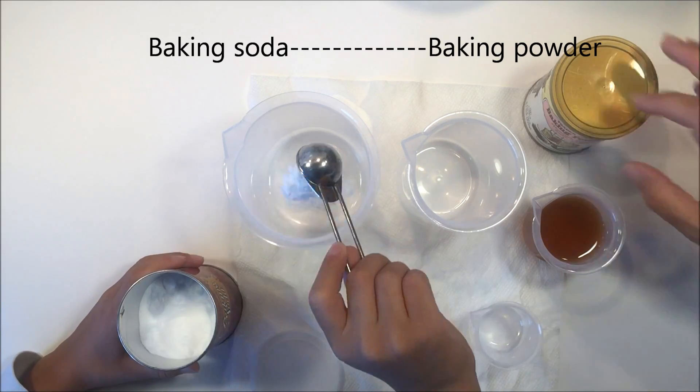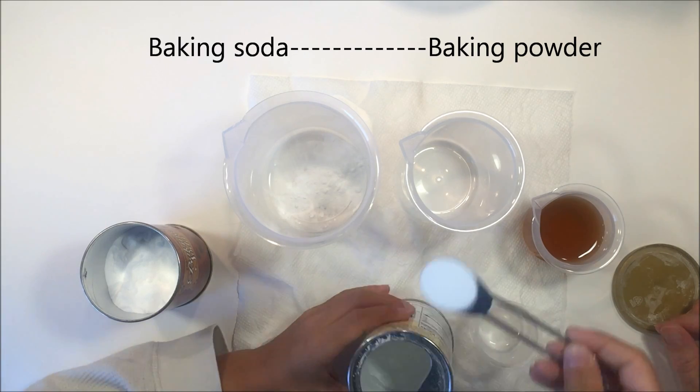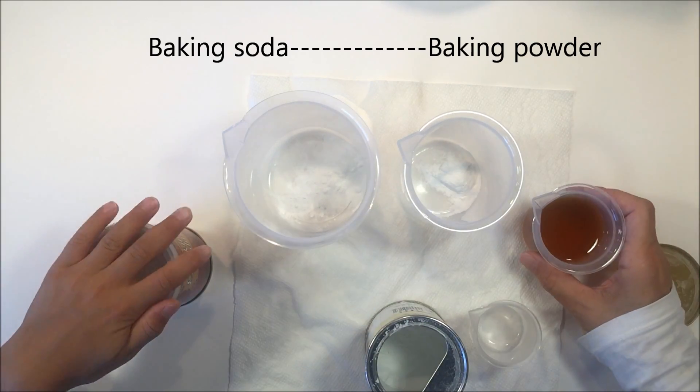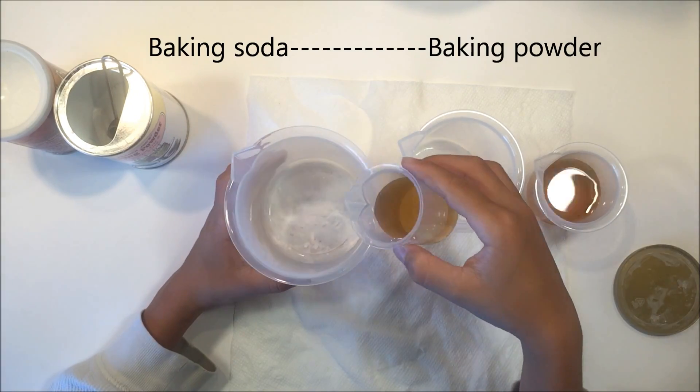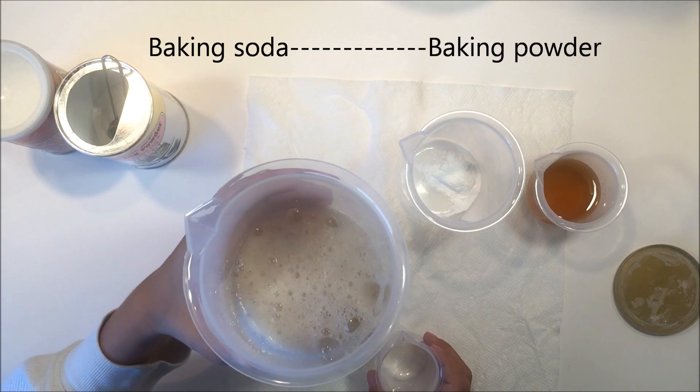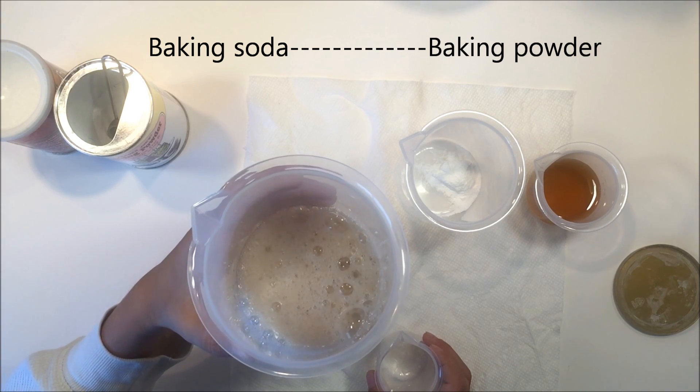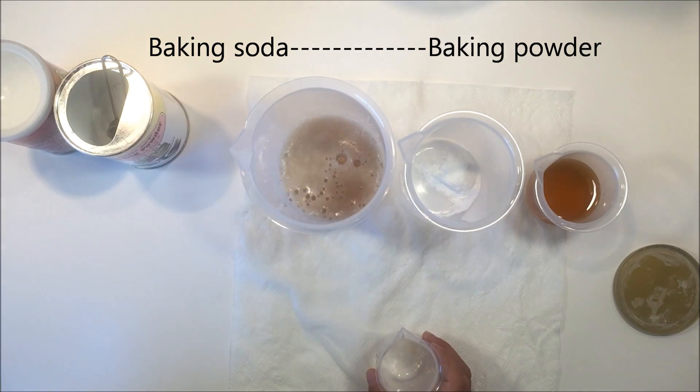All right, so we are now going to do about a teaspoon of baking soda and baking powder. Baking soda is made out of sodium bicarbonate, and baking powder is made out of sodium bicarbonate but it's also mixed with monocalcium phosphate which is an acid.